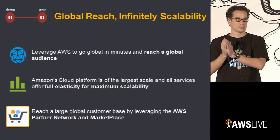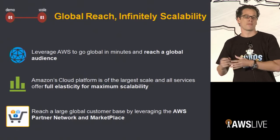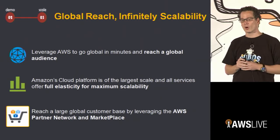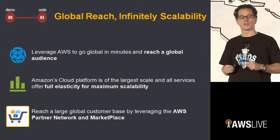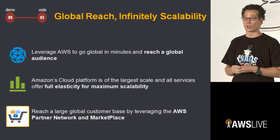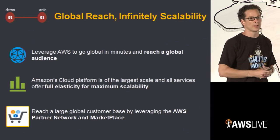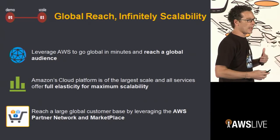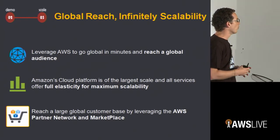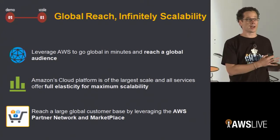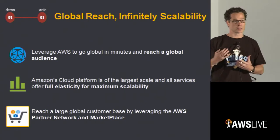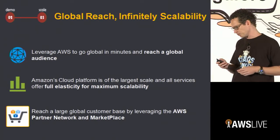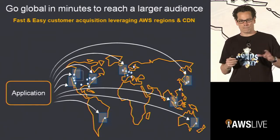Once you've got your MVP in the market and you want to scale, AWS allows you to reach customers in minutes globally. The platform is incredibly elastic and scalable — if all those users come, you don't have to worry, we can scale easily. We can also help you reach a large global customer base by leveraging our partner network if you're in the ISV or consulting space, and we recently launched the Amazon App Store in India as well.